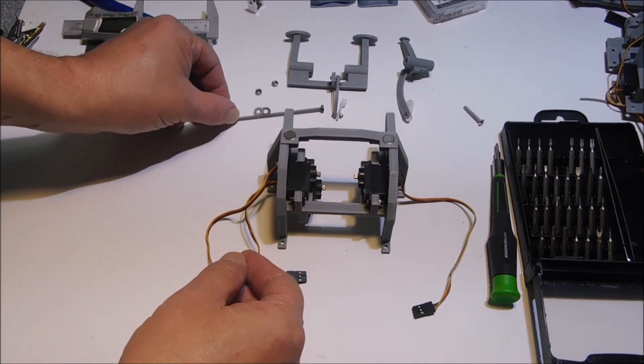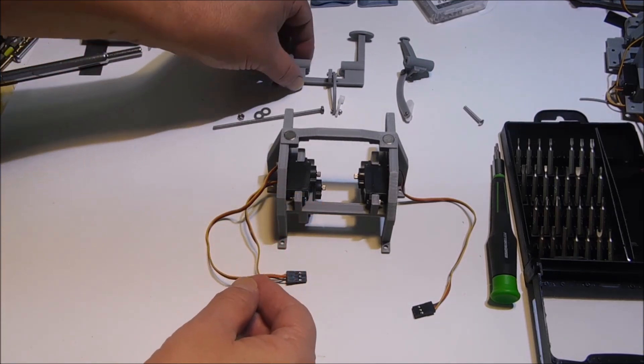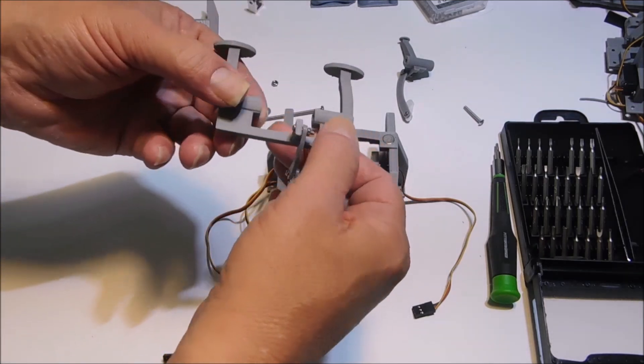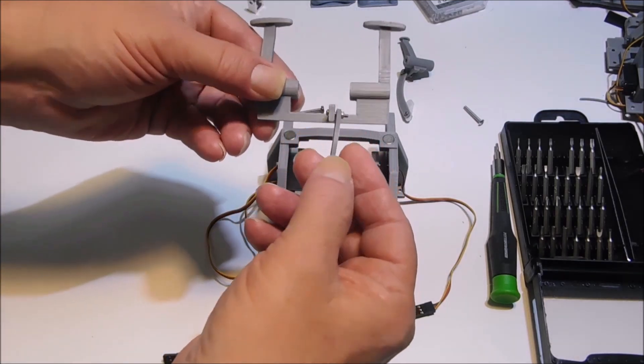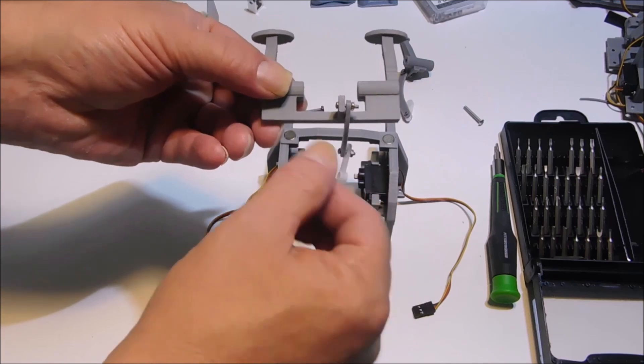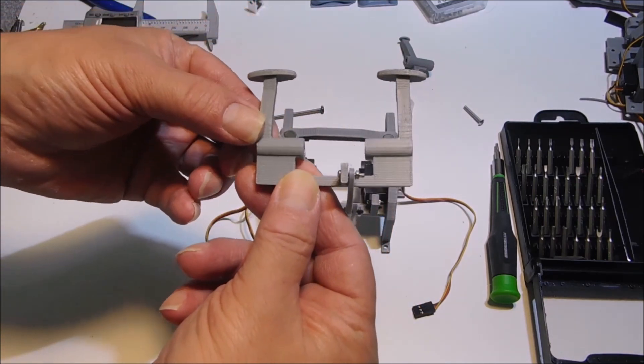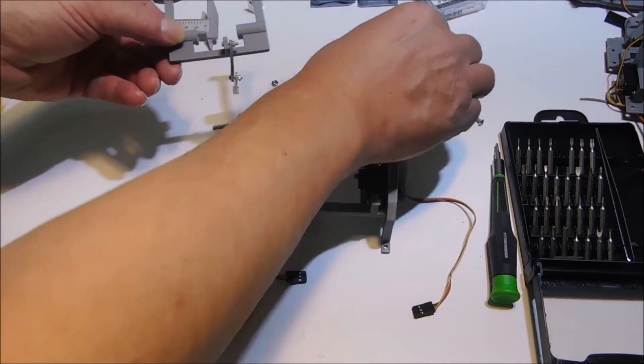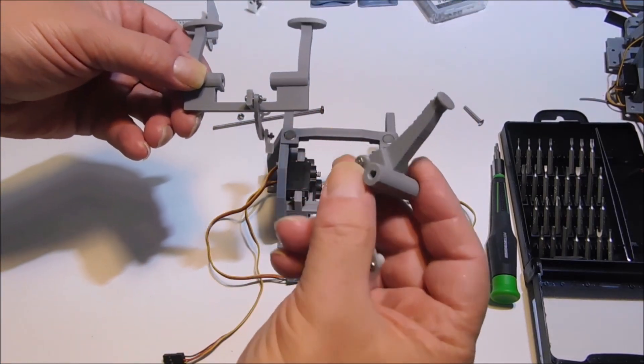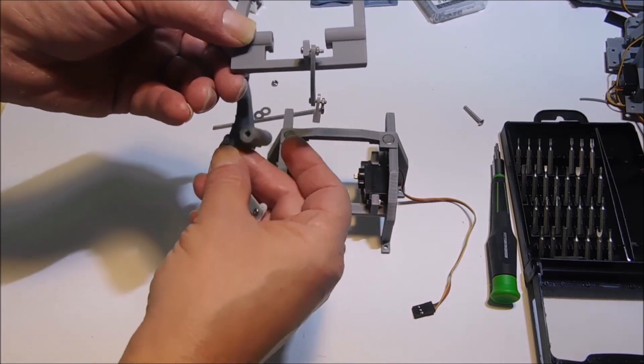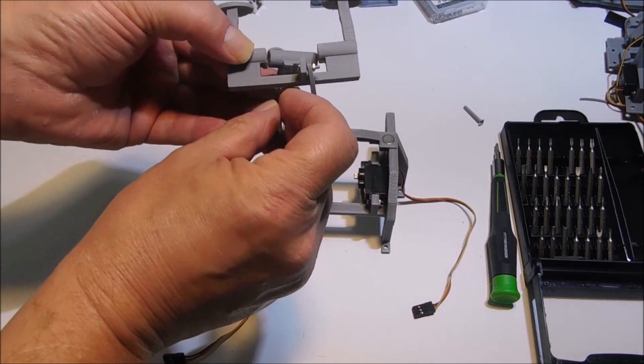But soon as you have this servo centered with no servo horn on it, center it and then place your servo horn in the right position with your mechanism, and then you can place your set screw through the servo horn, putting this in the same axis.